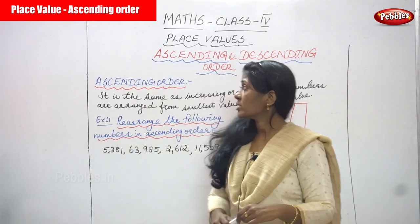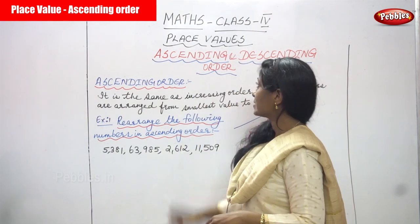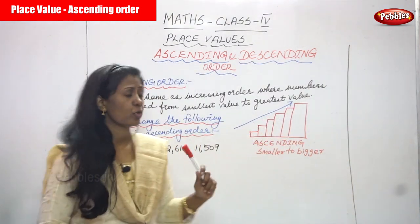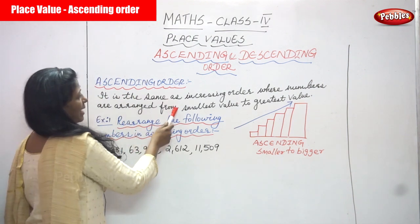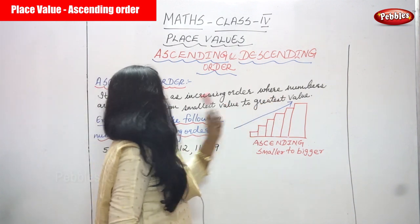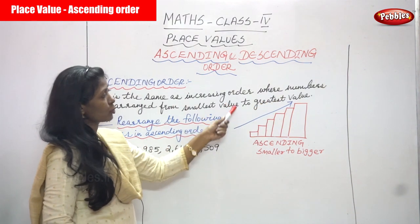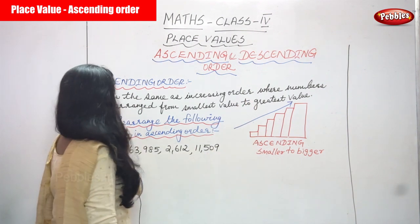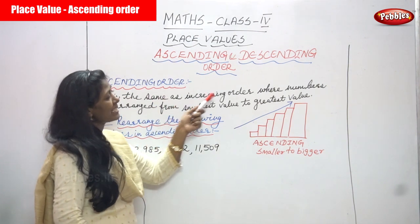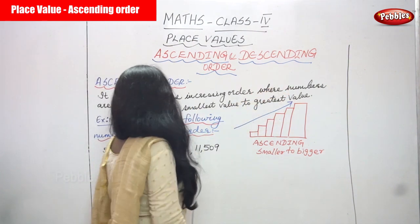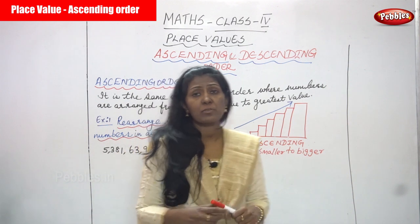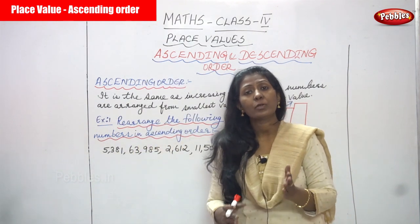Now we are going to see ascending order and descending order. First we are going to see ascending order. What is ascending order? It is the same as increasing order, where numbers are arranged from smallest value to greatest value.